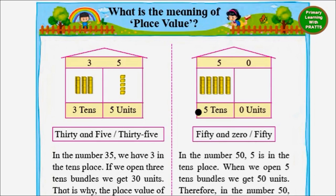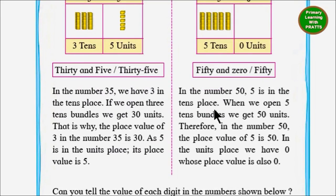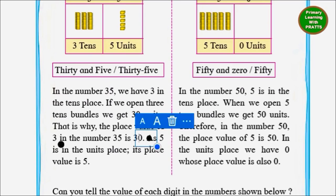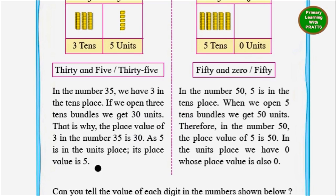Now let's read what they are telling us. In the number 35, we have 3 in the tenths place. And if we open 3 tenths bundles we get 30 units. That is why the place value of 3 in the number 35 is 30. As 5 is in the units place, its place value is 5.